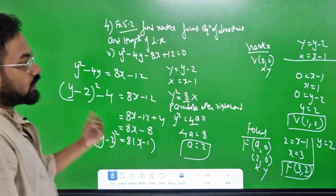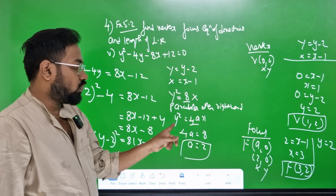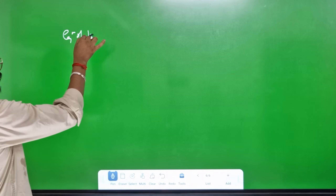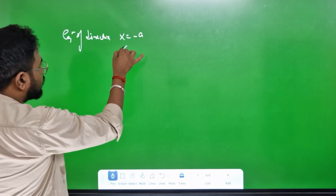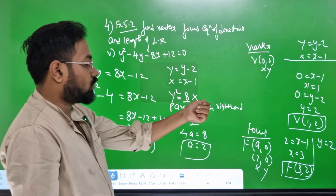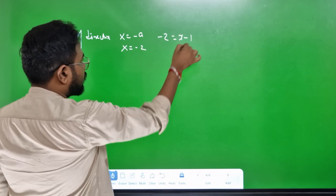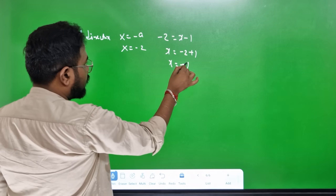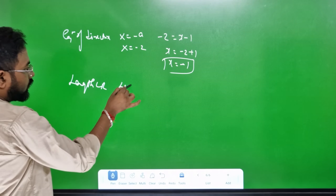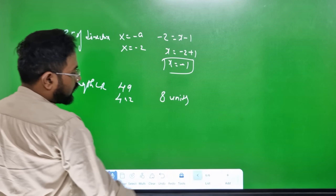Focus. Open rightward focus is (a, 0), so (2, 0) in capital X, capital Y. Capital X: x minus 1, so x equals 3. Capital Y: y equals 2. So focus is (3, 2). Equation of directrix: X equals minus a, so X equals minus 2. Substituting X equals x minus 1: x minus 1 equals minus 2, so x equals minus 1. That is the equation of directrix. Length of the latus rectum: 4a equals 4 times 2 equals 8 units.